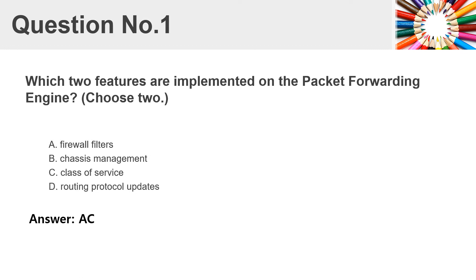Question number one. Which two features are implemented on the packet forwarding engine? Choose two. A. Firewall filters. B. Chassis management. C. Class of service. D. Routing protocol updates. Answer: A, C.